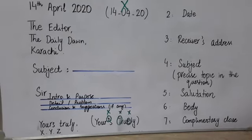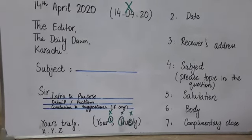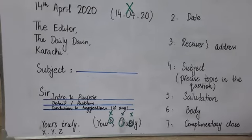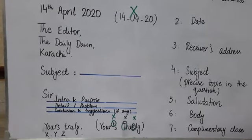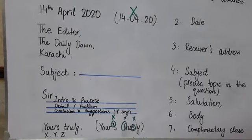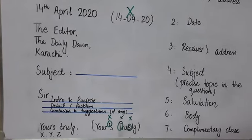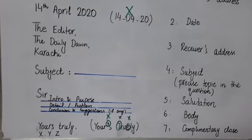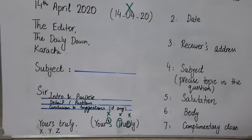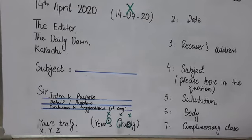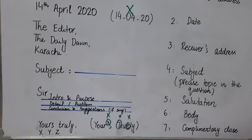The seventh part is the complementary close, in which you write 'Yours truly' or 'Yours sincerely,' etc. Before writing the complementary close, you can write 'Thanking you,' 'Thanking you in anticipation,' or 'Thank you.'